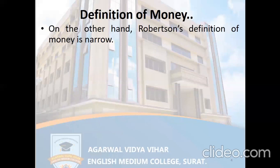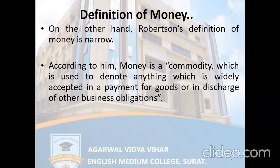On the other hand, Robertson's definition of money is very narrow or specific, considering only certain limited things as money. He says that money is a commodity used to denote anything which is widely accepted in payment for goods or in discharge of other business obligations. That means any commodity used for making payment of goods or business debts or obligations will be considered as money.